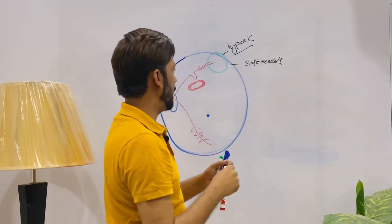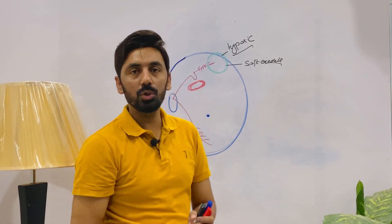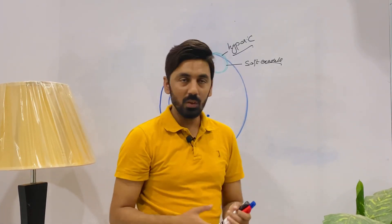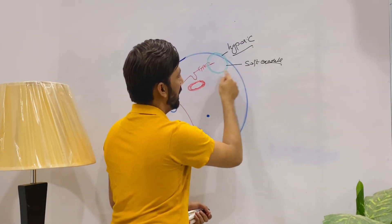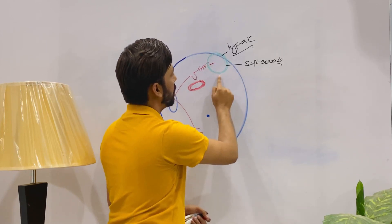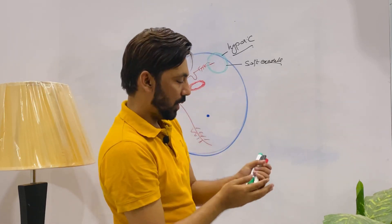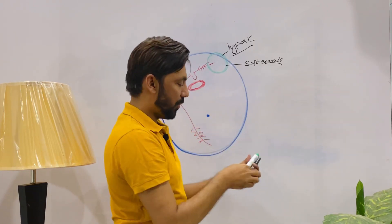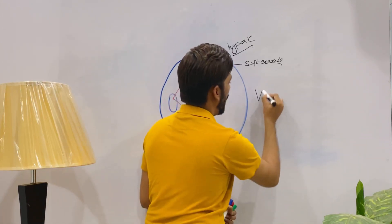We are going to learn about the pathophysiology of the formation of new blood vessels — how these new blood vessels are formed. Before dying, before the formation of soft exudates, this hypoxic patch — the patch with oxygen deficiency — will 'cry' for food and for oxygen.